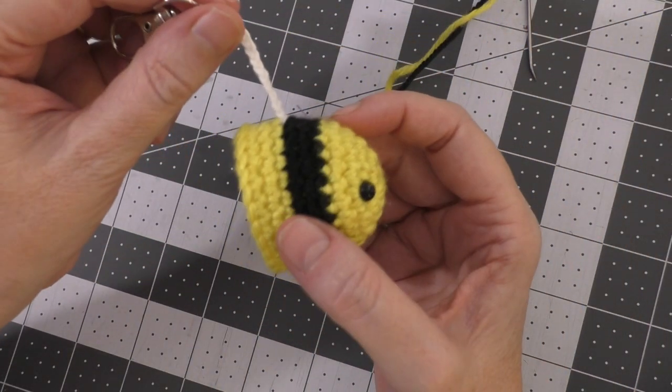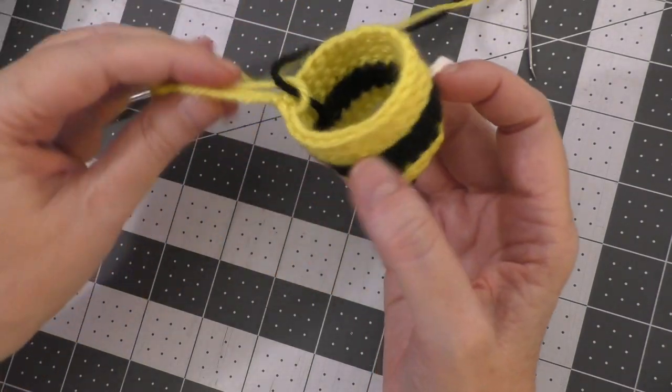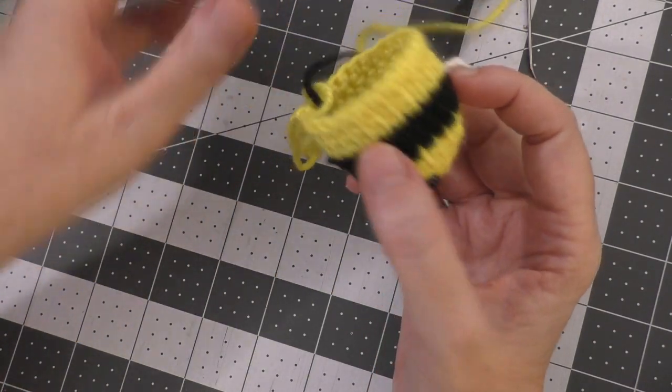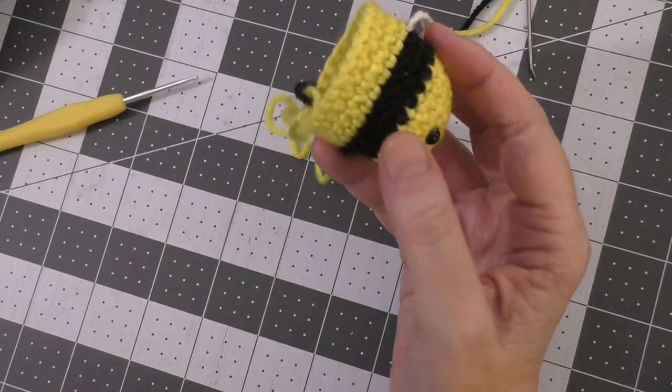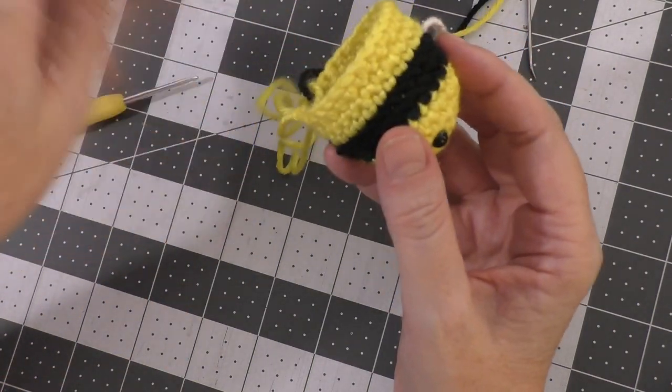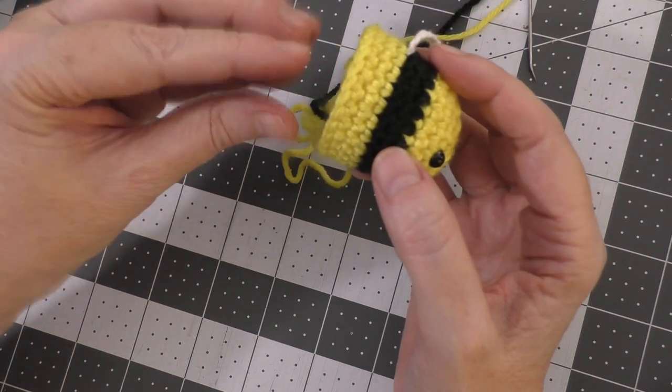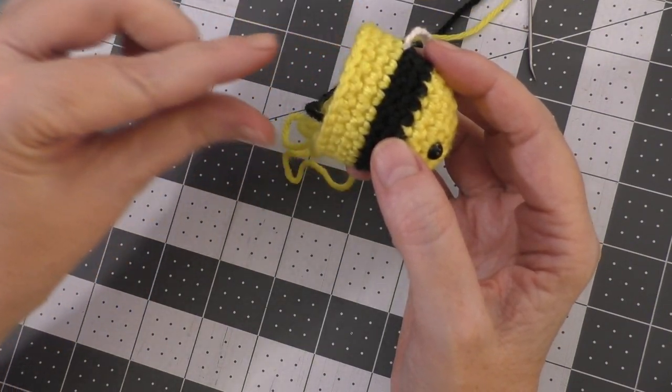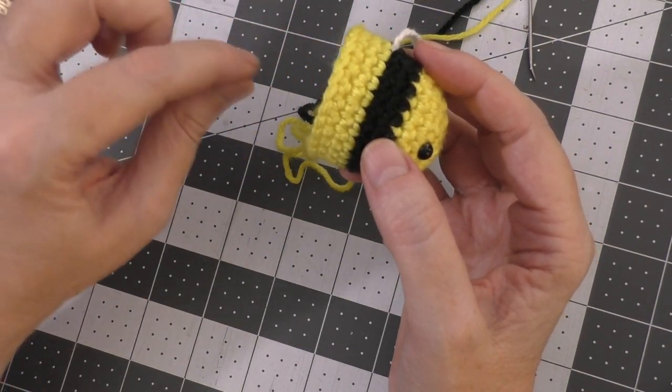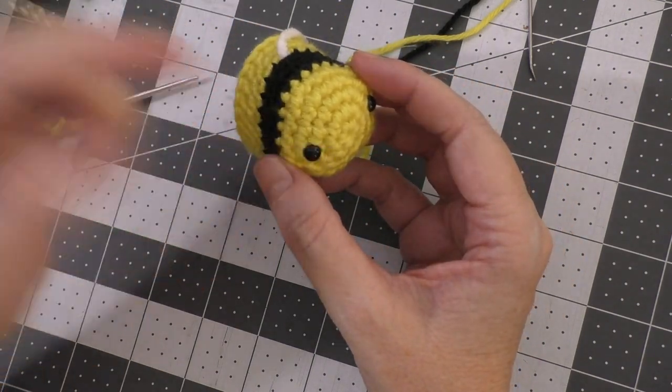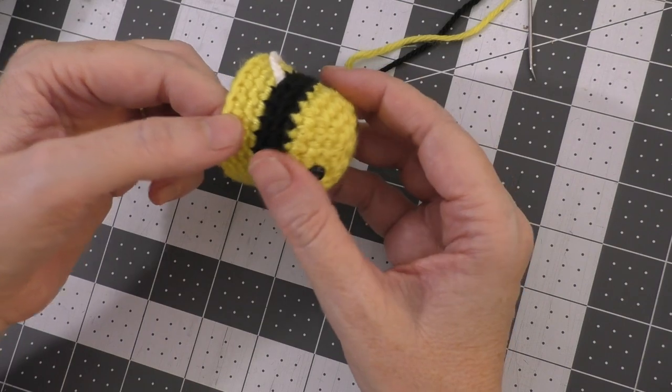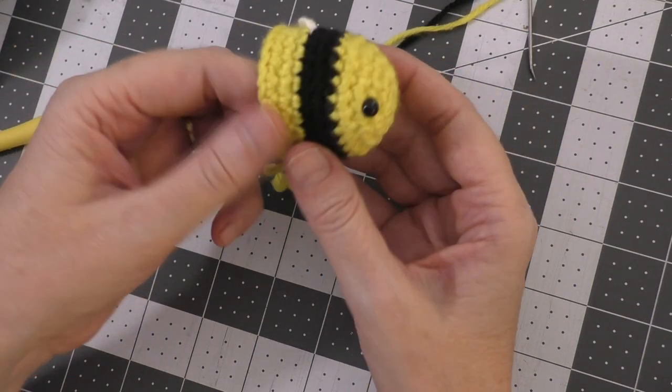So now I've got that attached, and now I'm ready to rejoin this black, and I believe the yellow, I have to look at the pattern, but I believe I am done with the yellow. I can cut that off and then continue with the black, and then the black is going to get decreased down to where the little stinger is on the bee. And then, of course, I'll attach my antennas and my little wings, and then my project will be done. I might go back and give him a little smile. He looks like he needs a little smile, right?